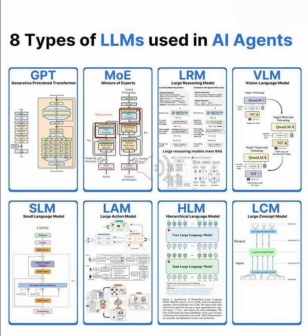Next is MoE, Mixture of Experts. This is a genius architecture. Instead of one massive model doing everything, MoE routes different tasks to specialized expert models. It's like having a team of specialists instead of one generalist. The result? Better efficiency and expertise for complex problems across multiple domains.